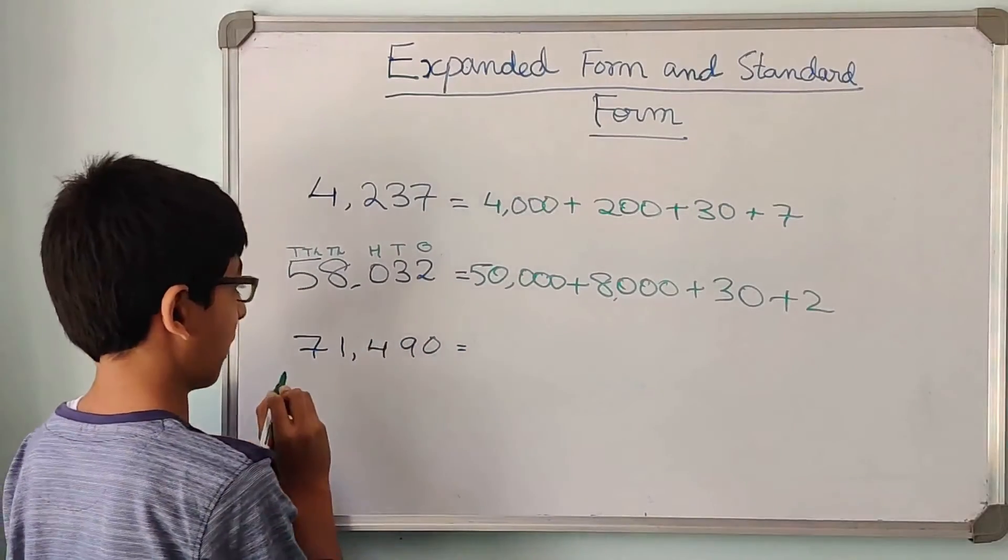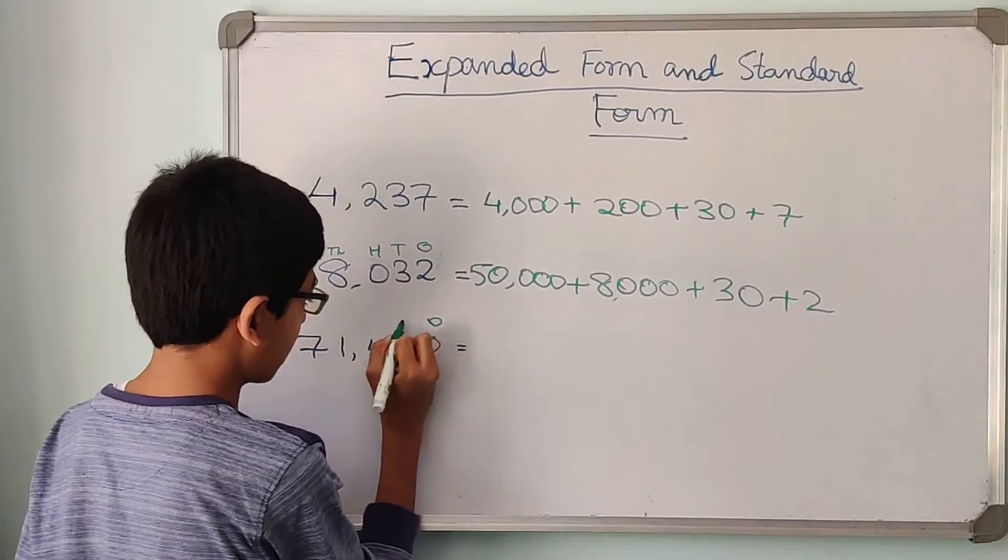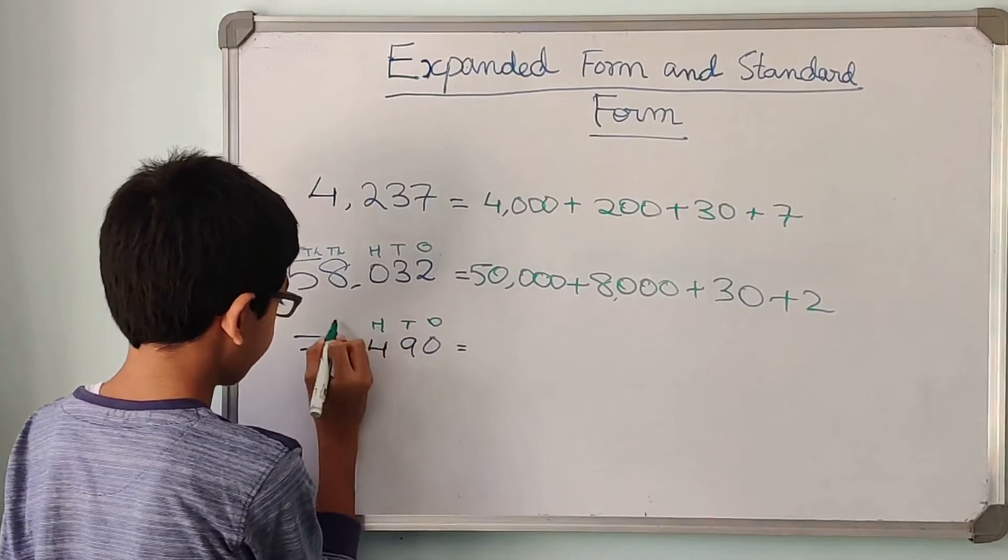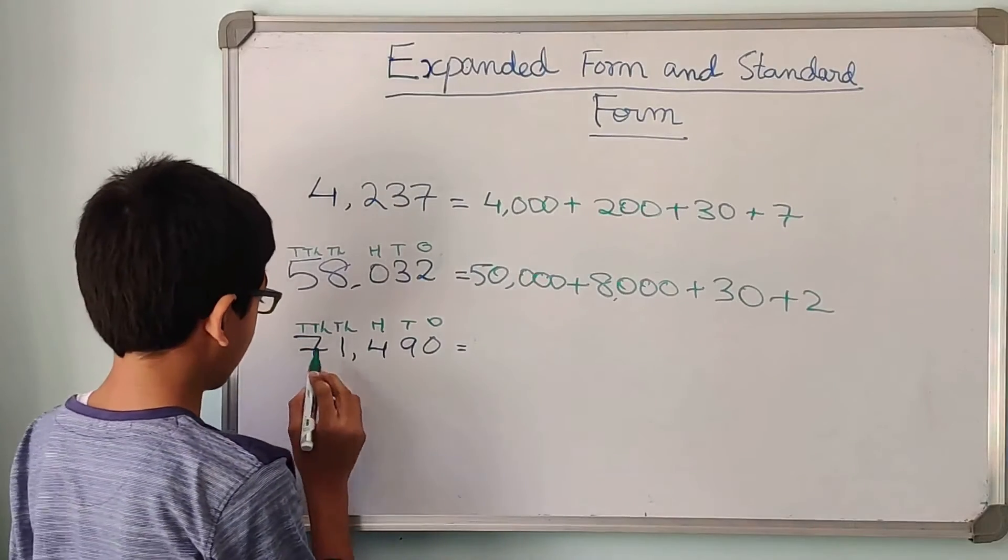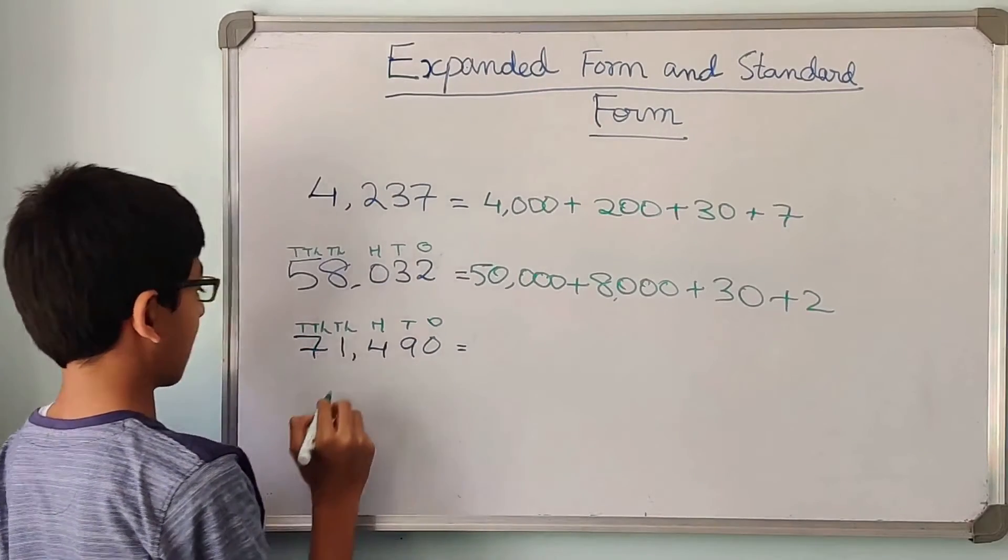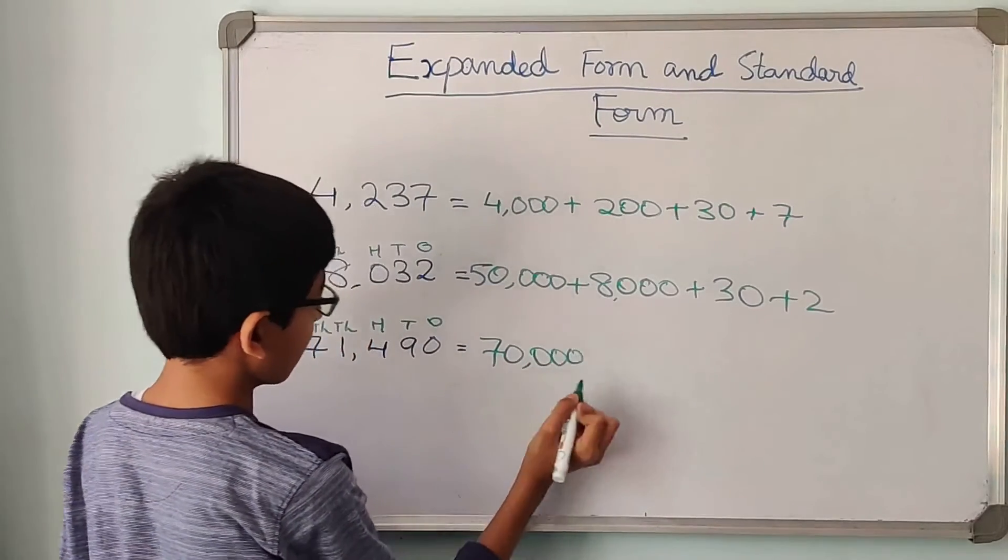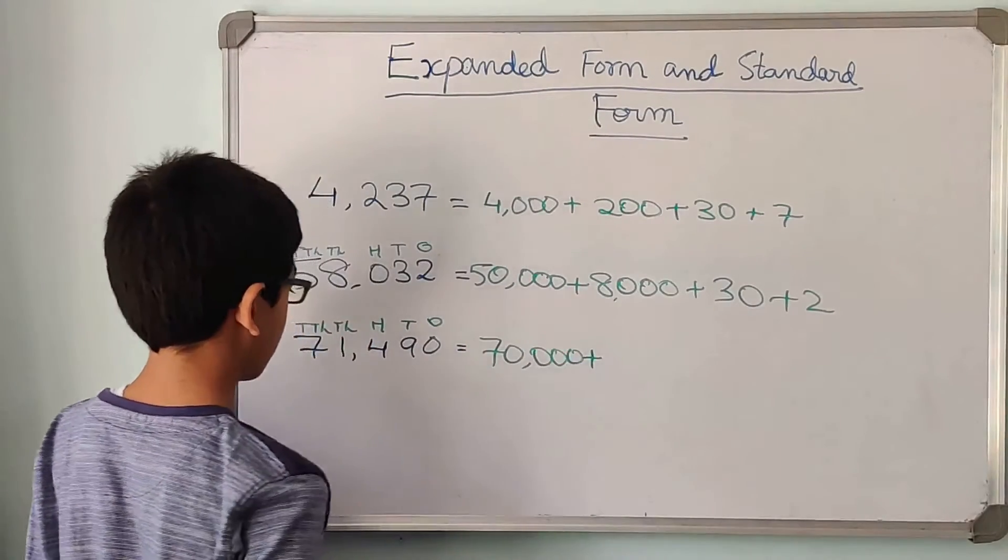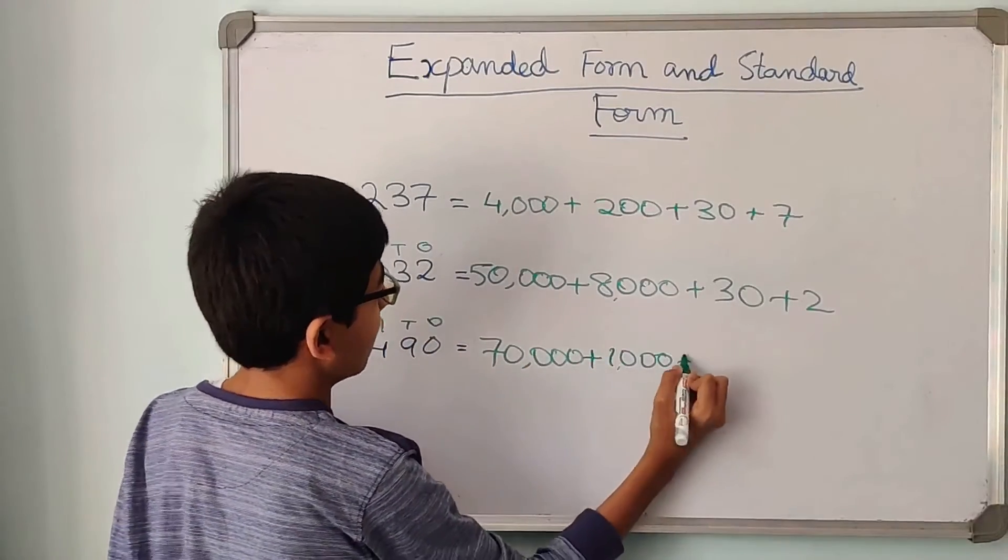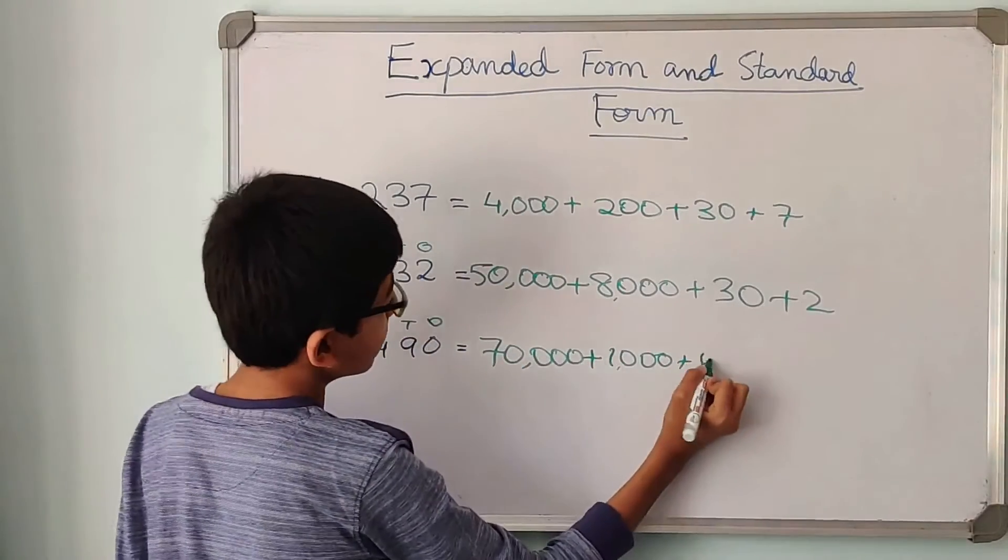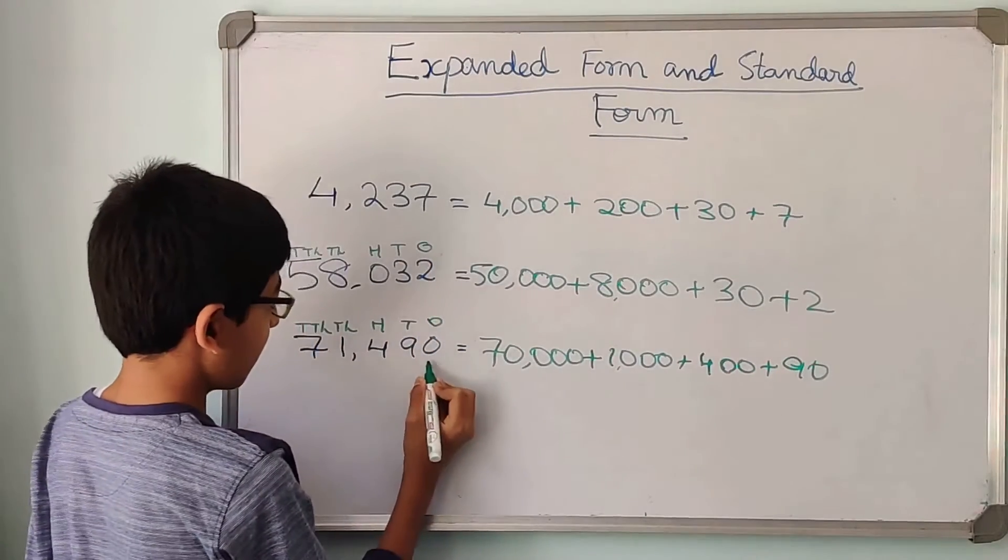Now we will move on to our next number. That is 71,490. Let me write the places. So now we can see that 70,000 is the first number, because 7 is in the ten thousands place. Now 1000 plus 400 plus 90.